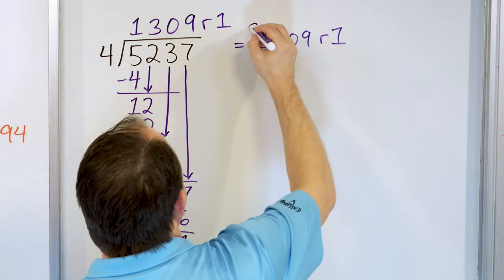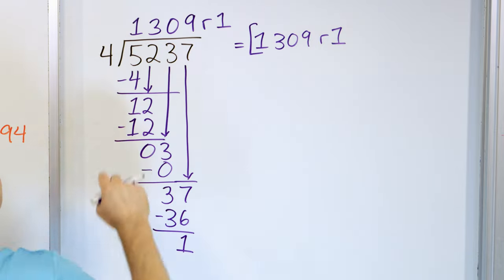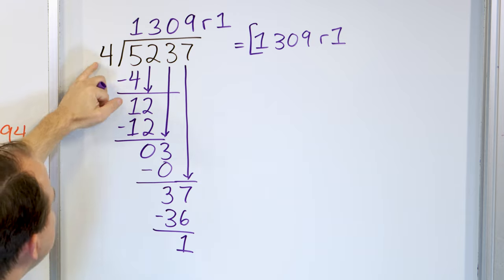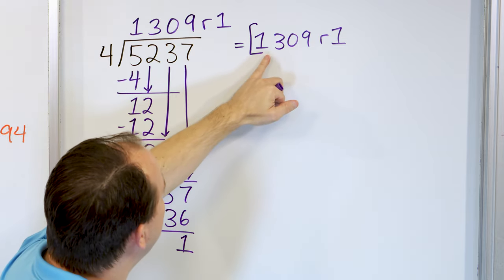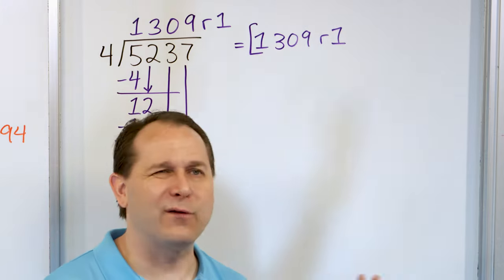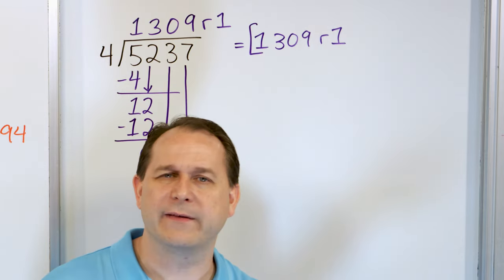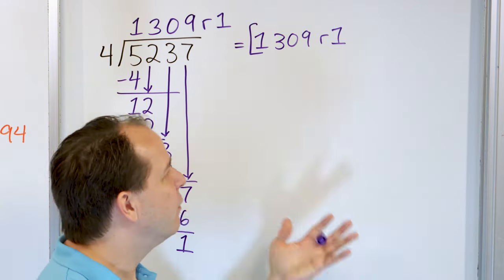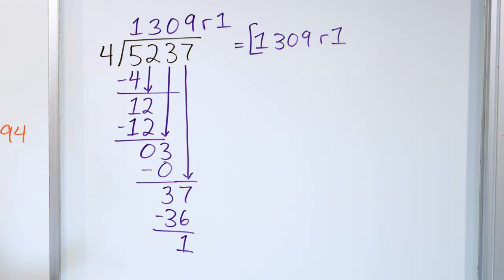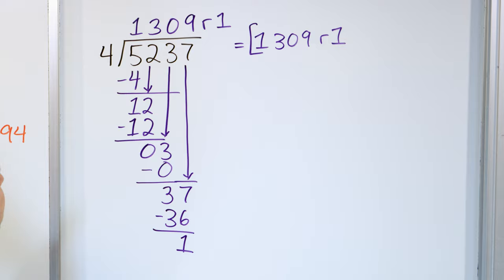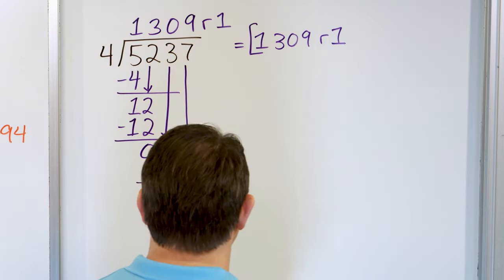So if I had 5,237 pancakes and put them on four plates evenly, every plate would have a stack of 1,309 pancakes tall, but I would have one pancake left over I couldn't distribute evenly — so that would be a remainder.